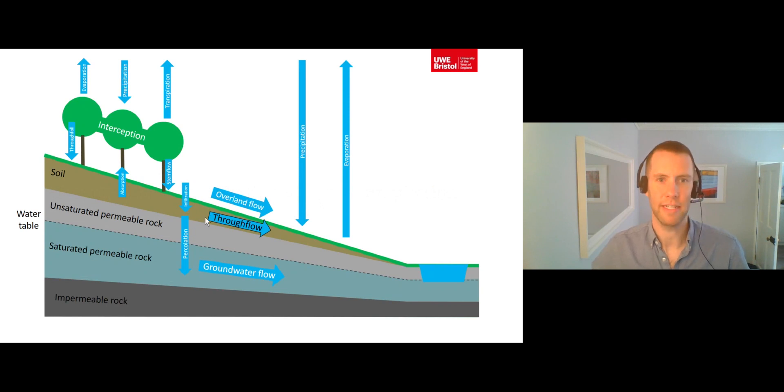Once water has been infiltrated into the soil, it can move laterally through the soil down the hill slope in a process known as through flow. Through flow is often a quick route for water to move downhill slopes into river channels.